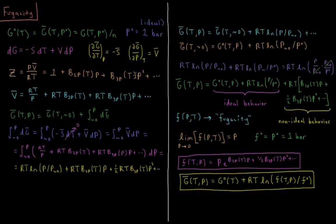For gases at low pressure, the behavior is pretty much ideal because P and P-squared become very small. Usually only the second virial coefficient matters, and if the pressure is low enough, even that one doesn't matter. Note that these virial coefficients depend only on temperature.